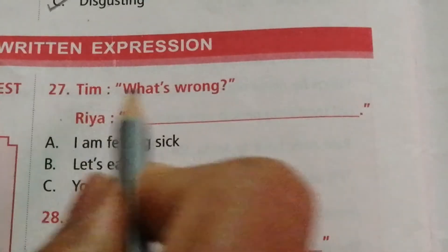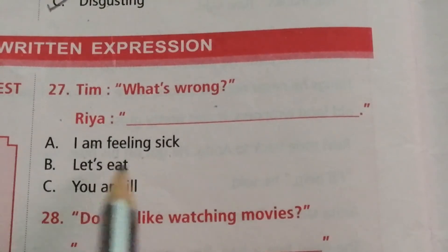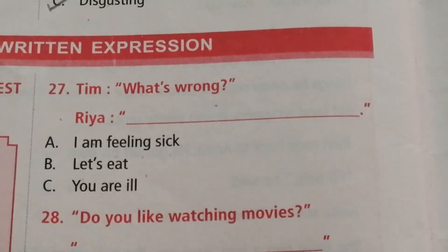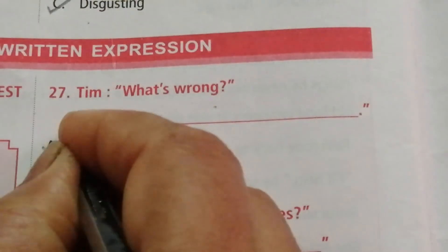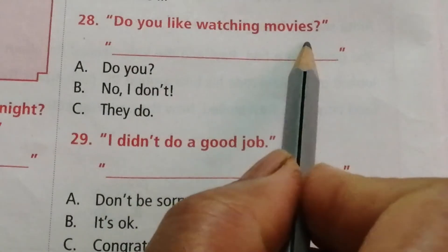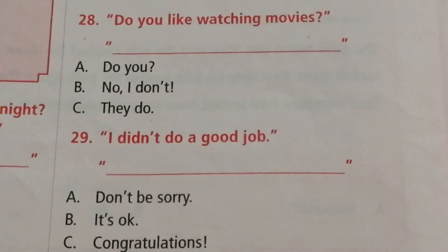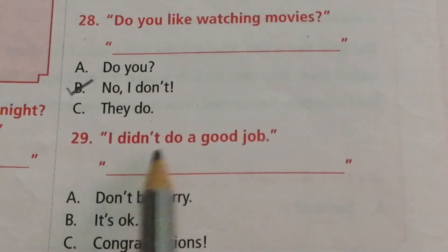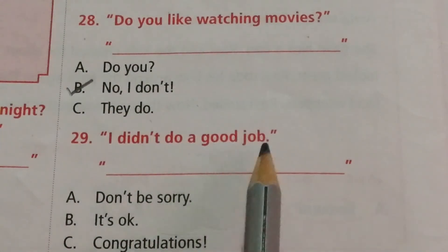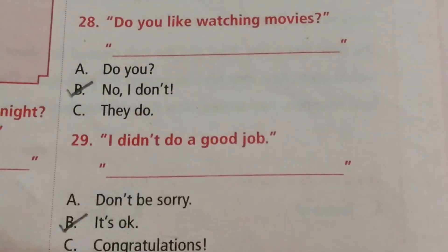Question 27 — Tim: What's wrong, Ria? Options are I'm feeling sick, let's eat, you are ill. The answer is — I'm feeling sick. Question 28: Do you like watching movies? Options are do you, no I don't, they do. The answer is B — no, I don't. Question 29: I didn't do a good job. Options are don't be sorry, it's okay, congratulations. The answer is B — it's okay.